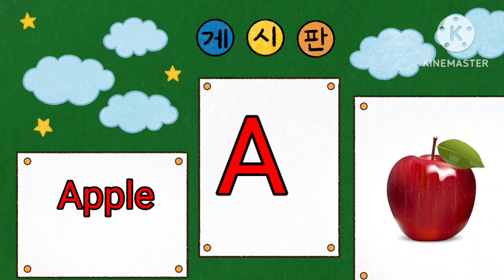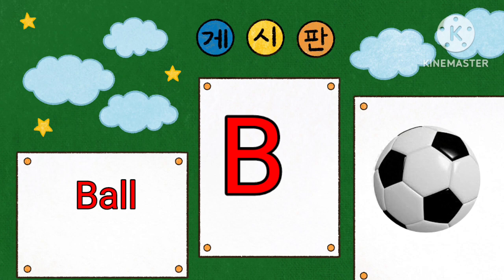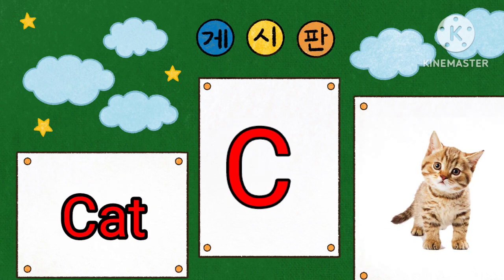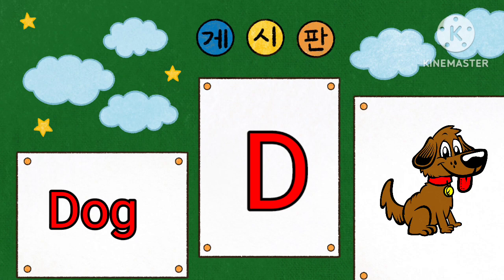A is for Apple. B is for Ball. C is for Cat. D is for Dog.